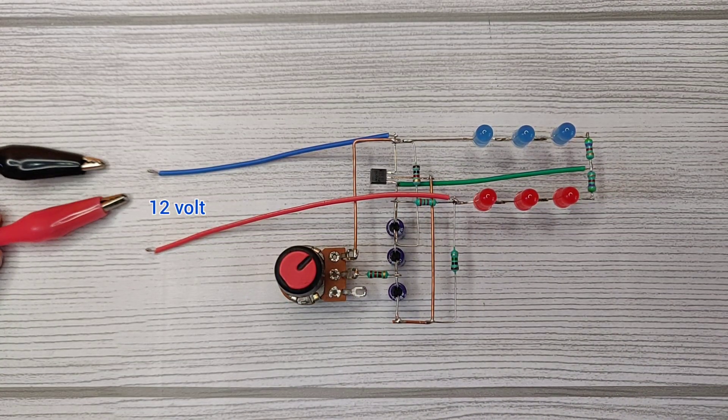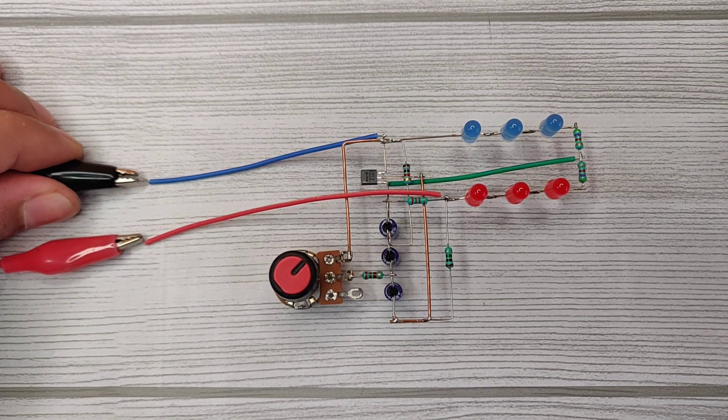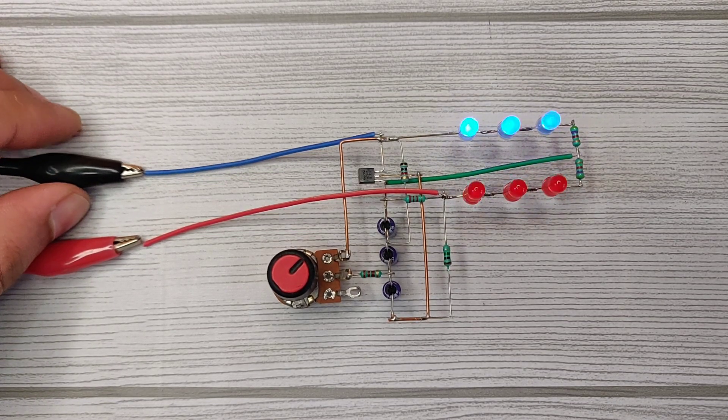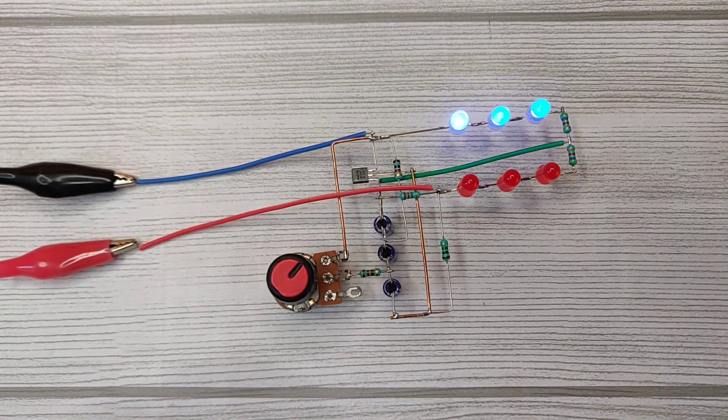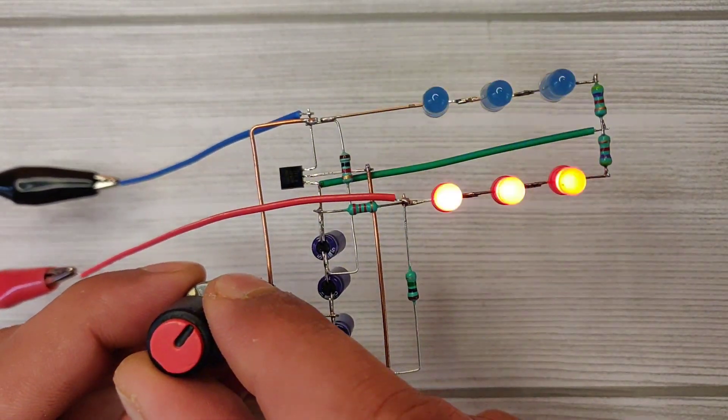Connect a 12 volt battery with the input wires. Here you can see both LEDs are blinking. You can also adjust the speed of blinking with this potentiometer.